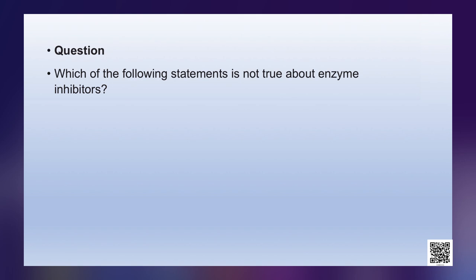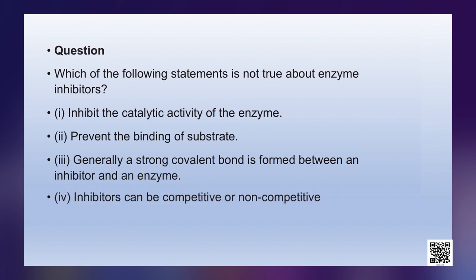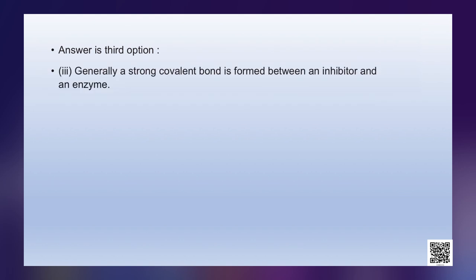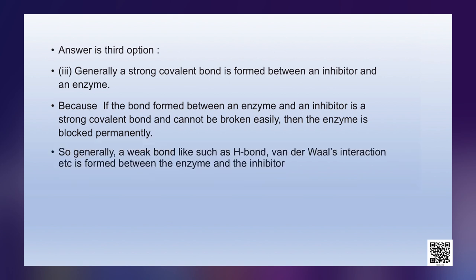Let's discuss a question: which of the following statements is NOT true about enzyme inhibitors? (1) Inhibit the catalytic activity of the enzyme; (2) Prevent the binding of substrate; (3) Generally a strong covalent bond is formed between an inhibitor and an enzyme; (4) Inhibitors can be competitive or non-competitive. The correct answer is option three — generally a weak bond like hydrogen bond or van der Waals interaction is formed between the enzyme and the inhibitor, not a strong covalent bond.